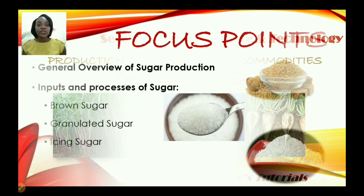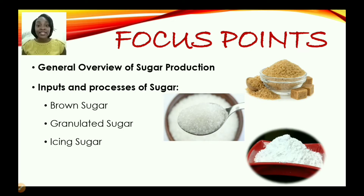In today's episode, we will look at a general overview of sugar production. We will also explore the inputs and processes of sugar — specifically brown sugar, granulated sugar, and icing or confectionery sugar. You may find that there are many more variations of sugar; however, these are the three we will be focusing on.